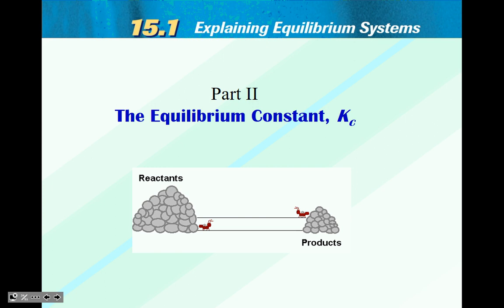Welcome to the second part of our 15.1 explaining equilibrium systems. This time we're going to take a look at those ICE tables, but we're going to add one more component — something called the equilibrium constant. The equilibrium constant is like a formula, and we're going to add that into our understanding of equilibrium systems.